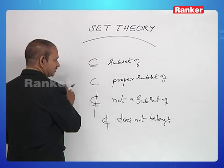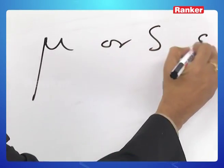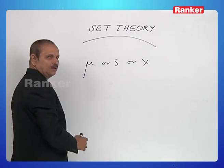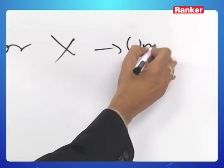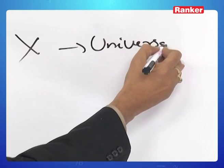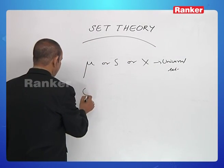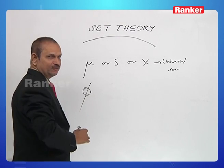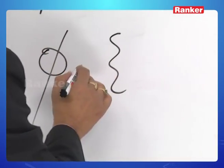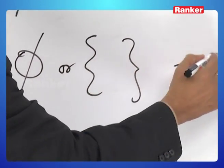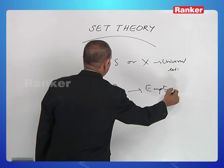There are some more standard symbols. Mu, S, or X — we use any of these three to represent a universal set. Next, the symbol phi (∅ or Φ) represents the empty set.